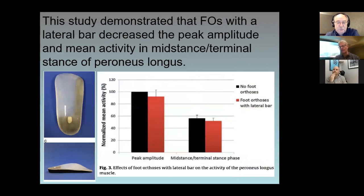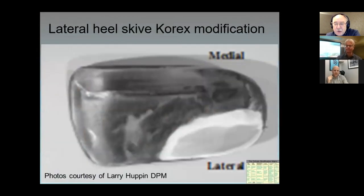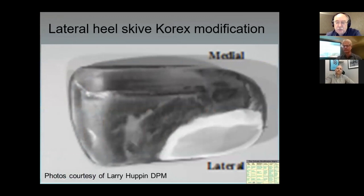There's no long-term effect seen with EMG, but it was an interesting study showing it does have an effect on the amplitude of the peroneus longus muscle. A lateral heel skive is also an option.